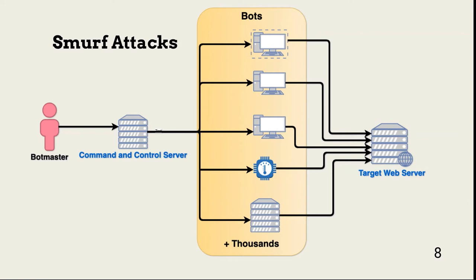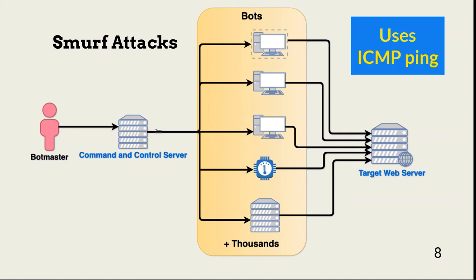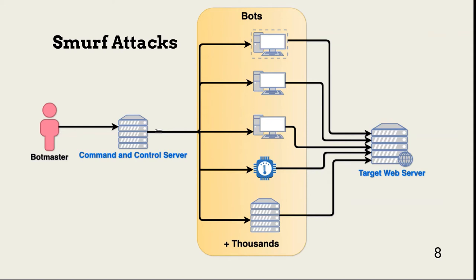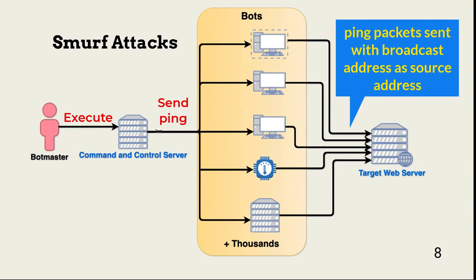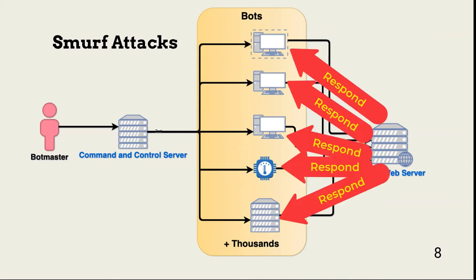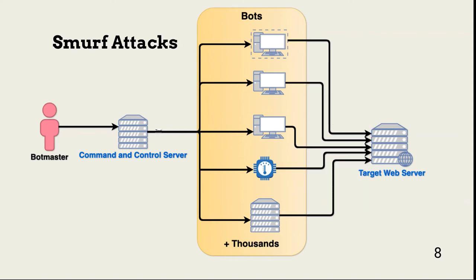Smurfing uses the Internet Control Message Protocol, or ICMP, to flood server and network resources. A basic smurf attack occurs when a threat actor floods the target network with ICMP ping request packets. The source address for the request packets is the network's broadcast address. The network is unusable as ping packets and their responses use available resources. An advanced smurf attack starts as a basic attack, but the ping requests are configured to respond to multiple victims across the Internet.